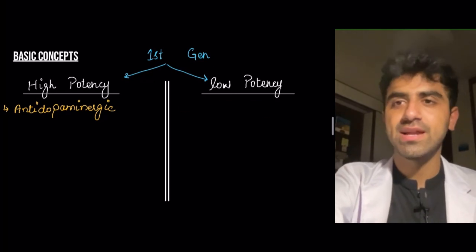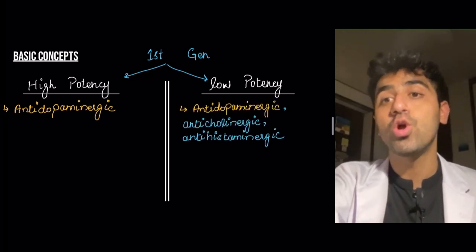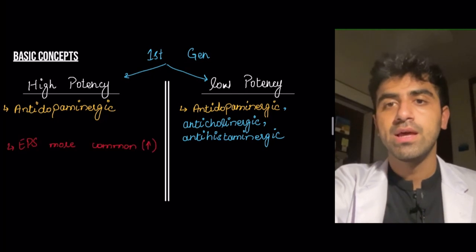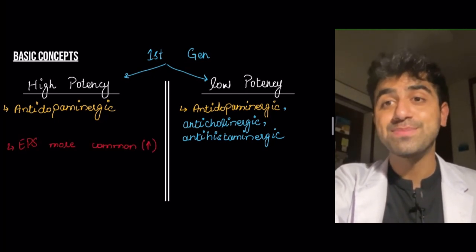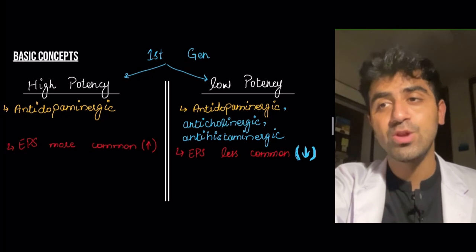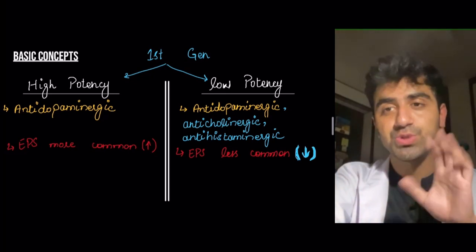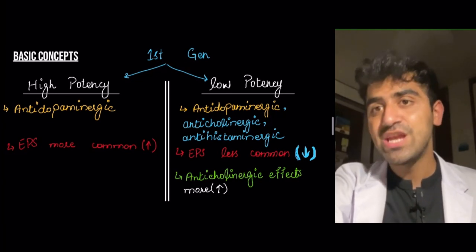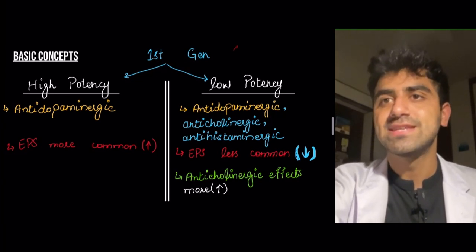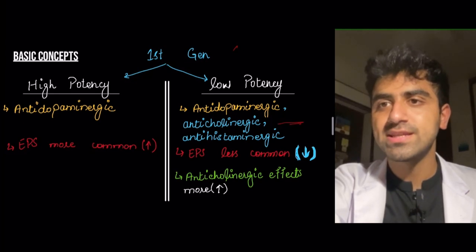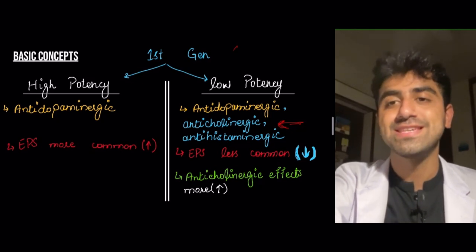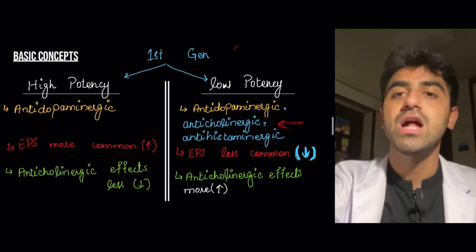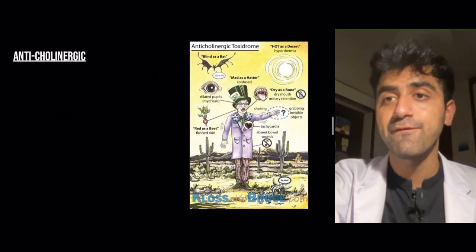To summarize the comparison table: high potency is anti-dopaminergic. Low potency is anti-dopaminergic but also anticholinergic and antihistaminergic. Extrapyramidal symptoms are more common in high potency and less common in low potency. Anticholinergic effects are more common in low potency and less common in high potency.